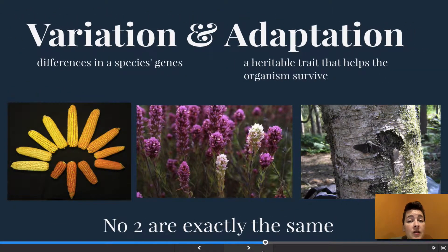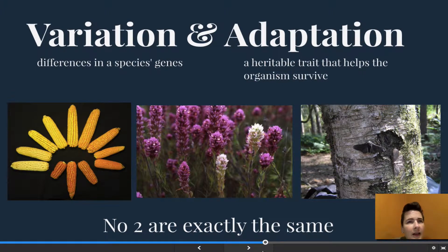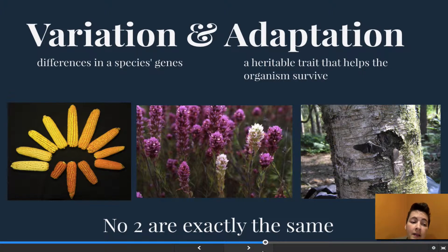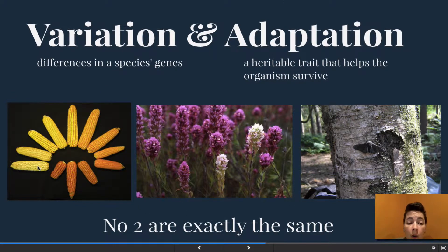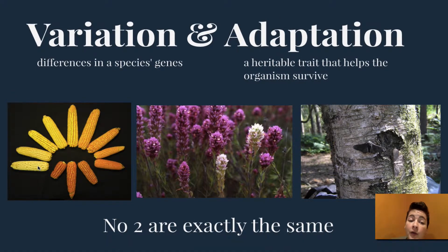Variation is a difference in species genes. If we take a look at variation in humans, it's very easy to see the variances between individuals. You might not think corn has much variation — corn looks like corn — but each plant is individual. This corn here is all from one species, and we have very yellow or white corn all the way to a very golden corn and a variety of different cob sizes.